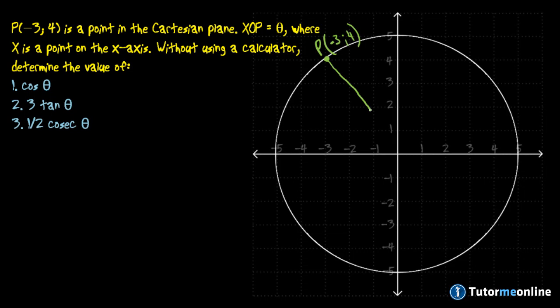We'll then join a line down to our origin because it tells us that our angle theta is the angle XOP where X is a point on the x-axis. So that would be from the positive x-axis to our line OP. That is then theta.